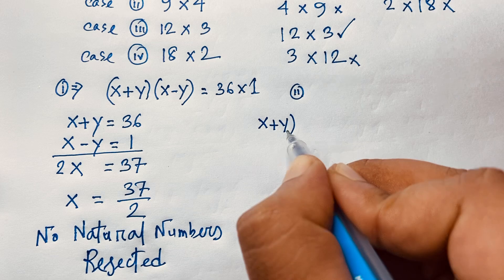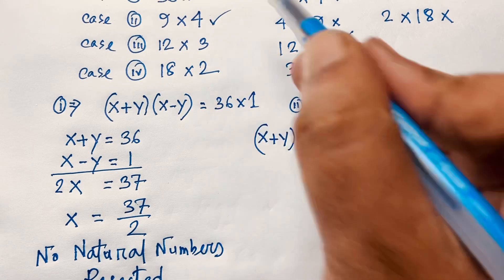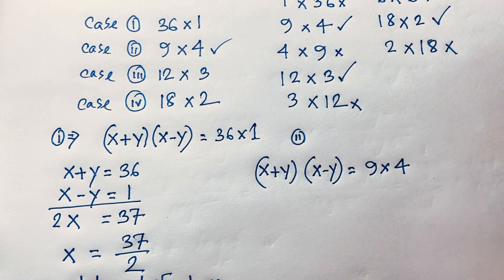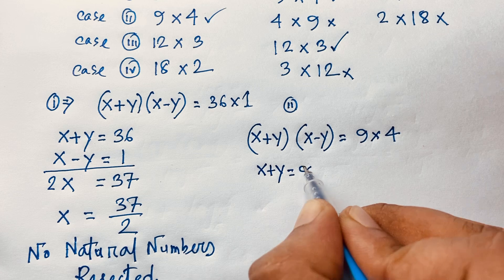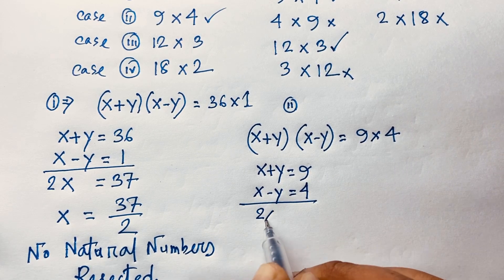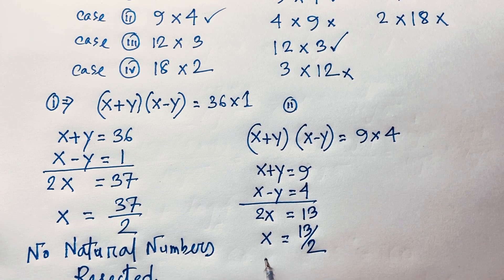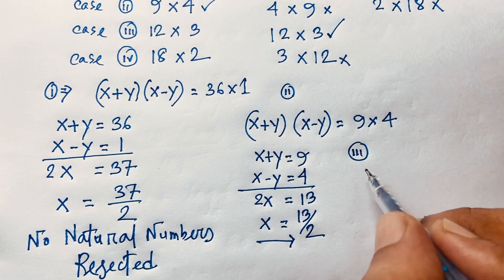Case 2: (x plus y)(x minus y) = 9×4. So x plus y = 9 and x minus y = 4. Adding gives 2x = 13, so x = 13/2. This is a fraction, not a natural number, so Case 2 is also rejected.